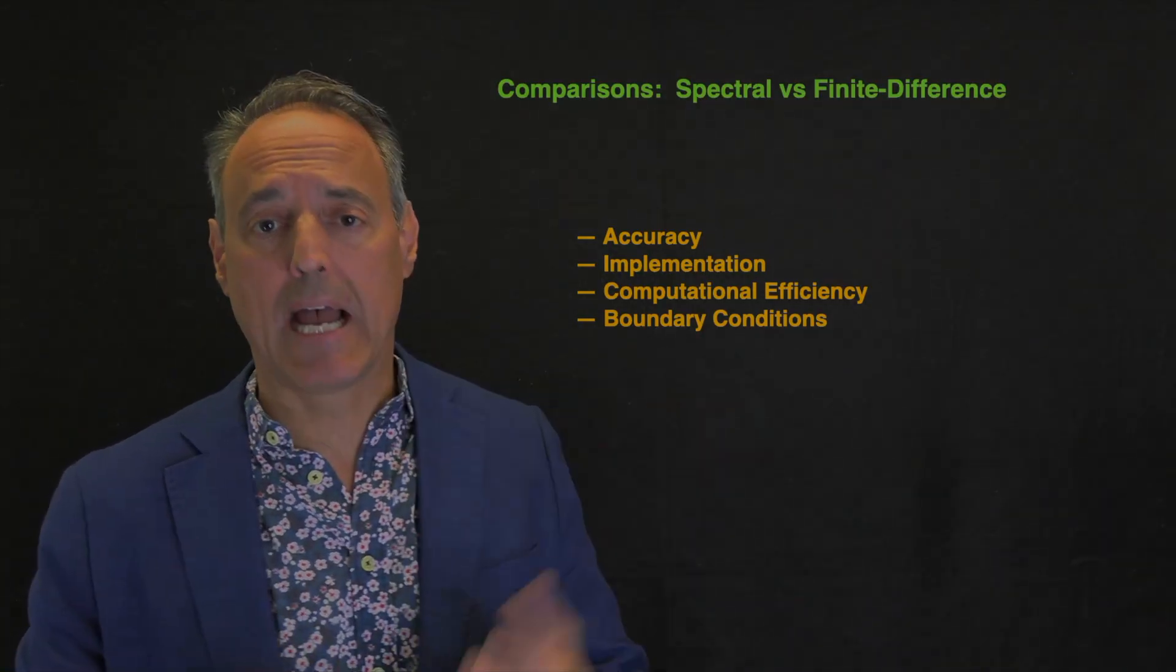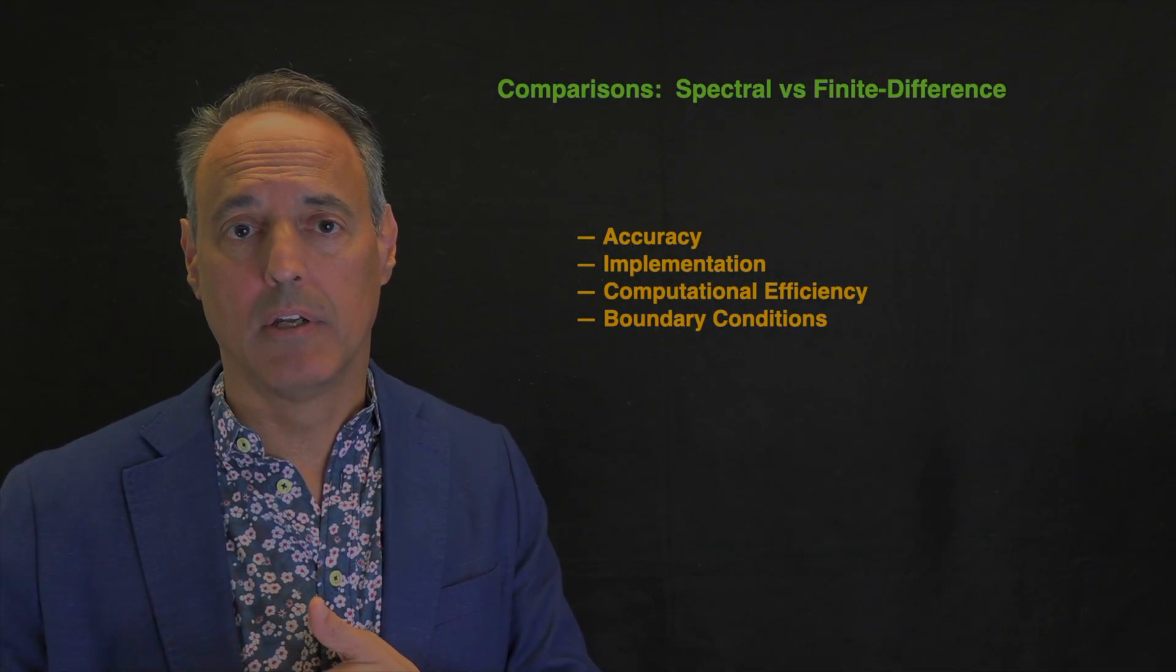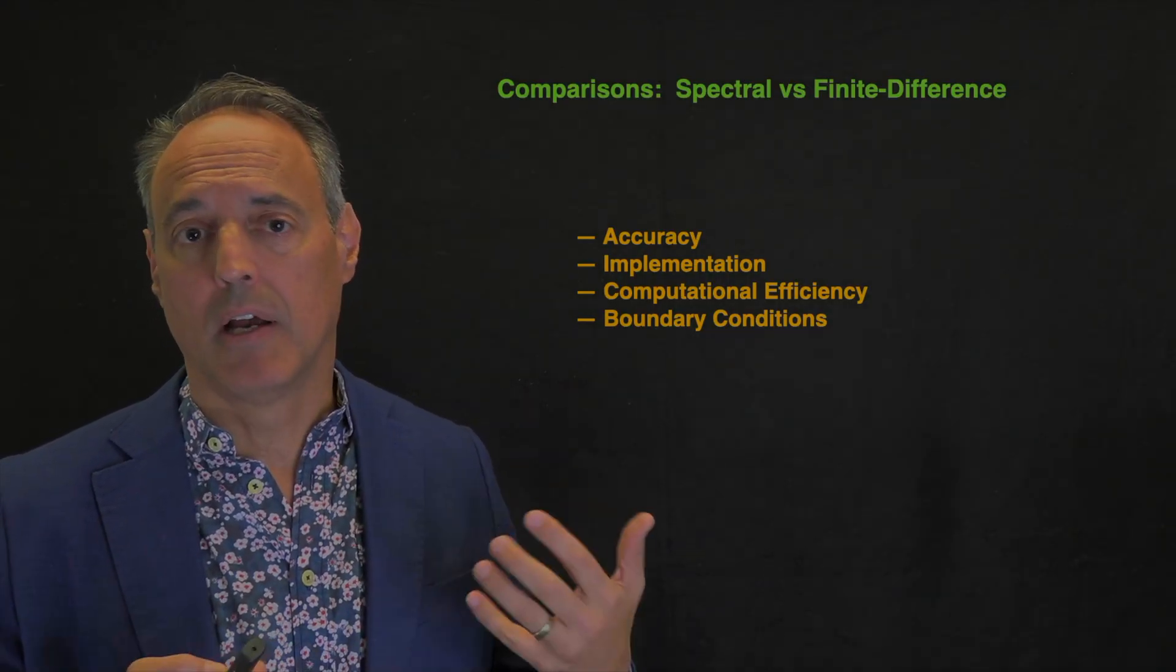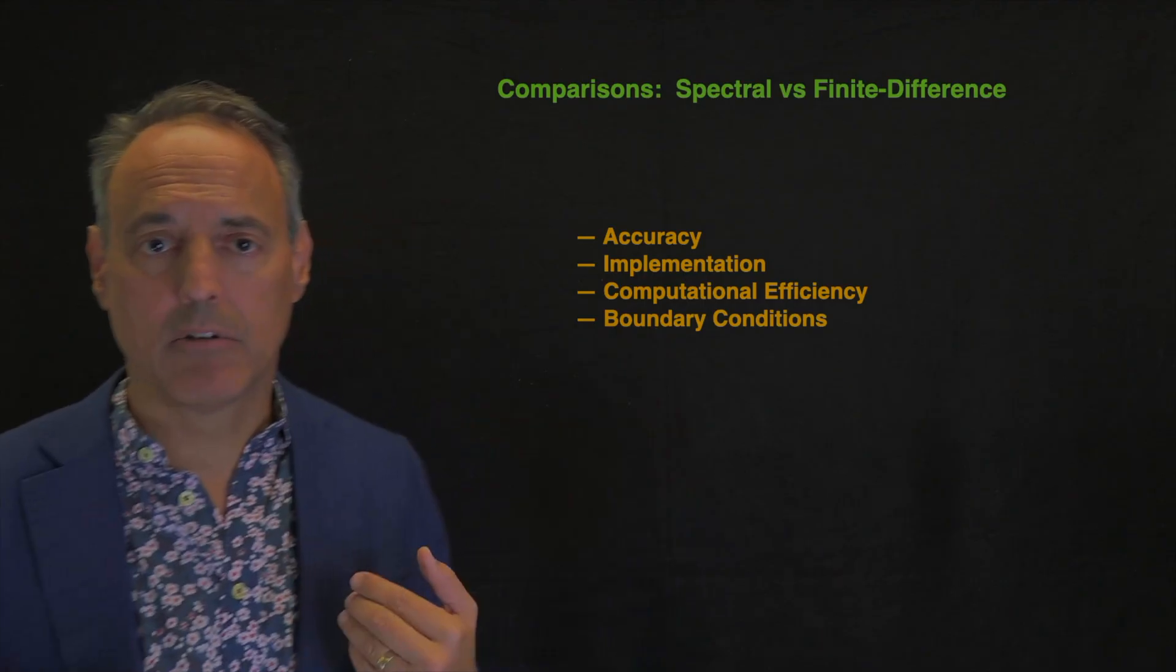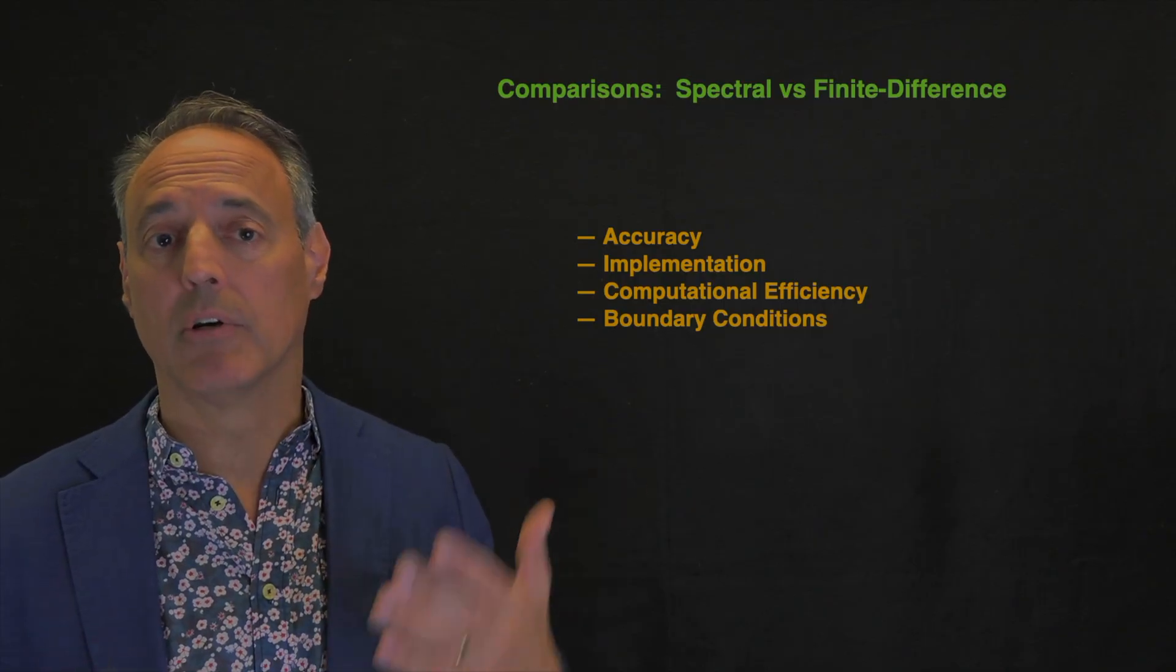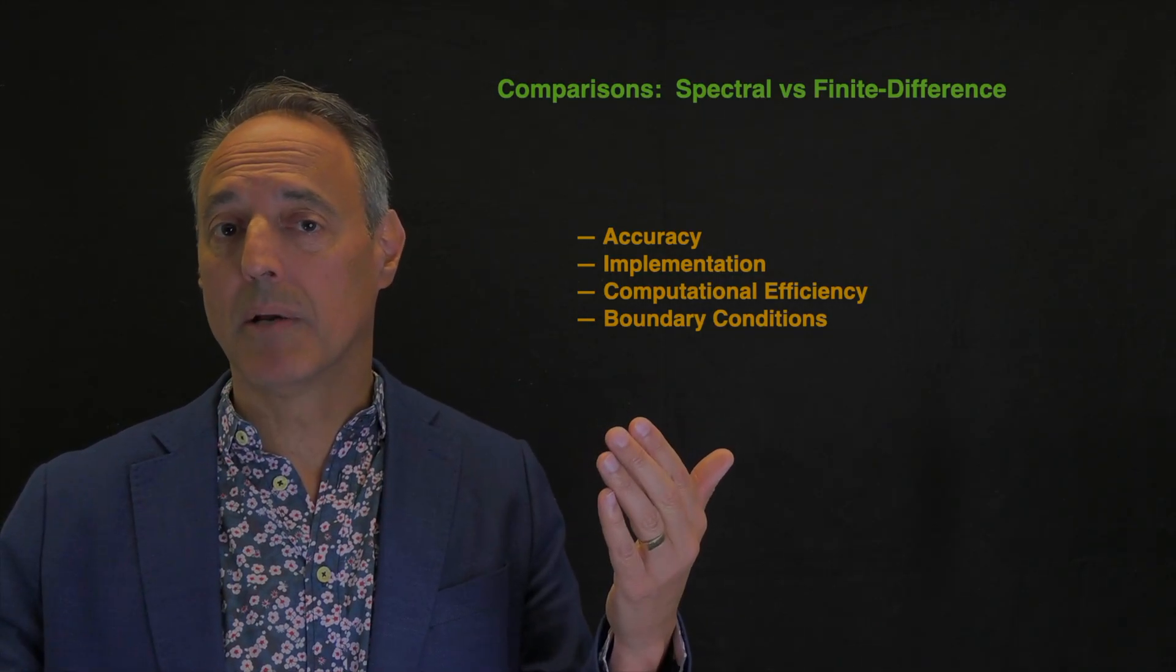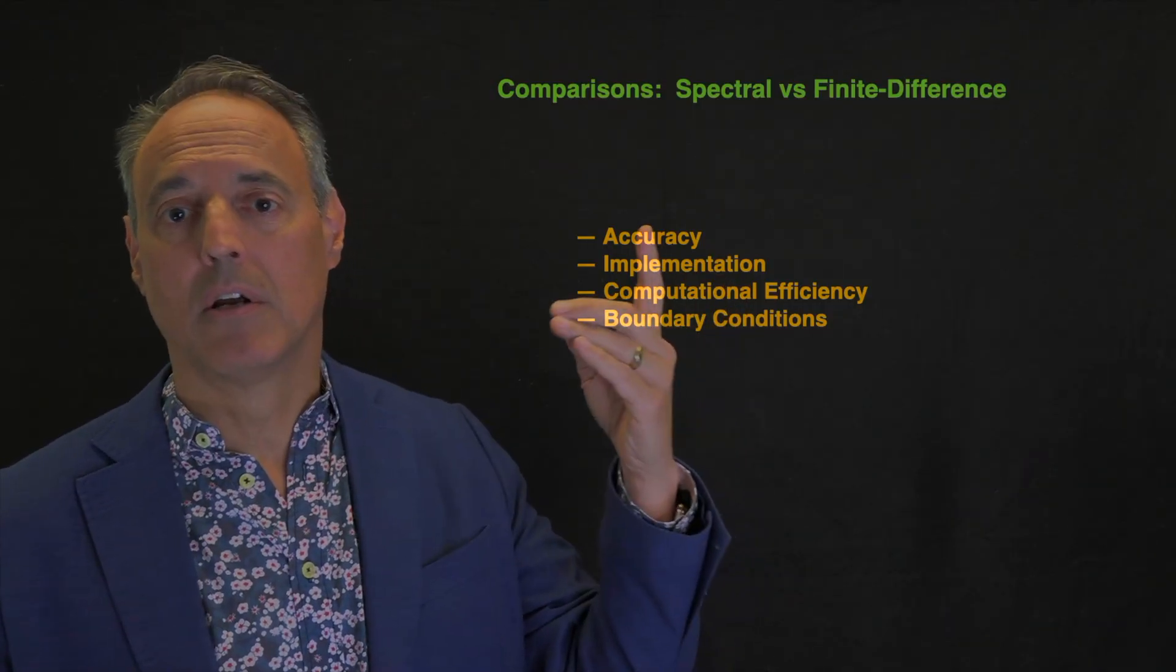So first of all, let's talk about accuracy. On the accuracy side, spectral methods are what I call exponentially accurate, whereas finite difference methods are polynomial accuracies. So you pick a scheme, like a second order, fourth order scheme, but spectral methods are beyond all orders accuracy. All that means is they're much more accurate. So when it comes to accuracy, if you can use a spectral method, it is the right choice to be making. It is much more accurate for the same number of grid points that you would be using. The implication is also that for a certain accuracy with finite differences, you might be able to use a lot less points to get the same accuracy with spectral methods. In either case, spectral methods win the day here.